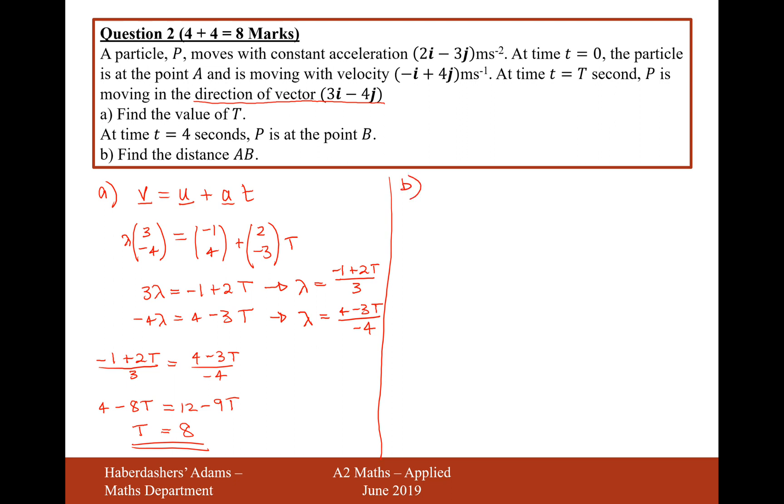And moving on to part b, then, at time t equals 4 seconds, P is at point B. Find the distance AB. So it looks like we're trying to find a distance here. We have some initial speeds, we have some times. So I think we're going to use here, s equals ut plus half a t squared.